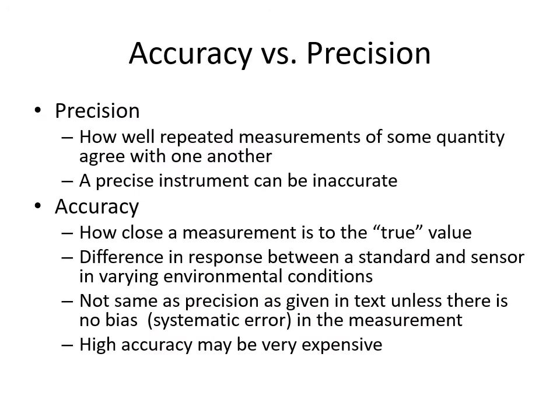Let's explain accuracy and precision. Precision is how close a bunch of measurements are to one another — a good trait if you get the same result given the same conditions. But a precise instrument can be woefully inaccurate. Accuracy is how close measurements are to the true value, which is unknown. We assess it by comparing our sensor's response to that of a standard across varying environmental conditions. High accuracy and high precision are not the same thing, especially if there's a systematic error, and high accuracy can be very expensive.